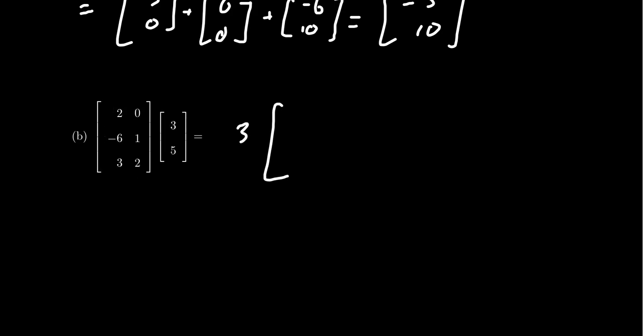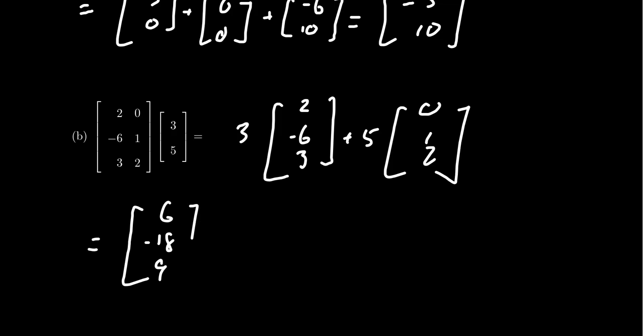And so you're going to get 3 times 2, negative 6, 3, plus 5 times 0, 1, 2. And so simplifying with the scalar multiplication, we get 6, negative 18, 9, and we're going to add that to the next one, 0, 5, and 10.